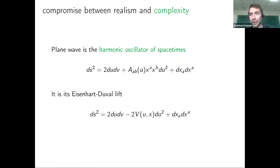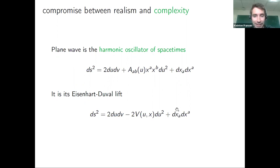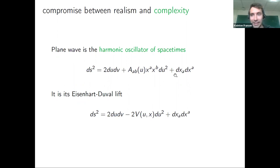The isometries of the plane wave spacetime form the Heisenberg algebra, so you can think of this spacetime as the harmonic oscillator of spacetimes. Equivalently, the plane wave spacetime is the Eisenhart-Duval lift of the harmonic oscillator: if I give you a dynamical system with potential V, I can rephrase the problem in terms of a geometry where the null geodesic equation gives solutions to the dynamical system.